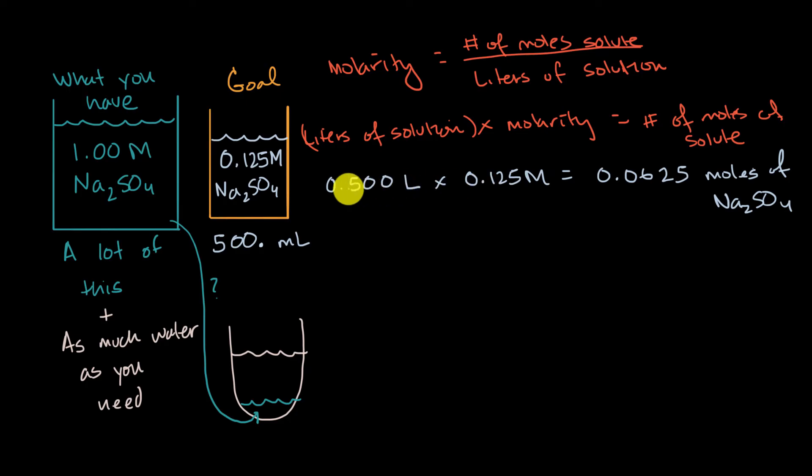And let's see if I got the significant figures right. I have three right over here, one, two, three, one, two, three. So I take the product, I'd still have one, two, three significant figures. So this is our goal.